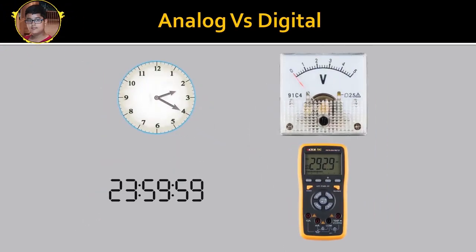On the left side, you can see the time is compared on Analog and Digital. In the Analog Watch, it is very difficult to see the definite value. On the right side, it is comparing of Analog and Digital Multimeters.